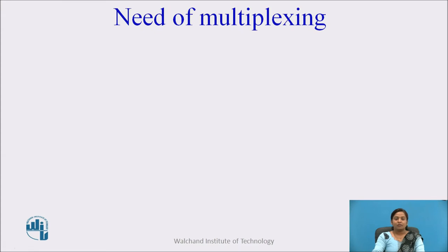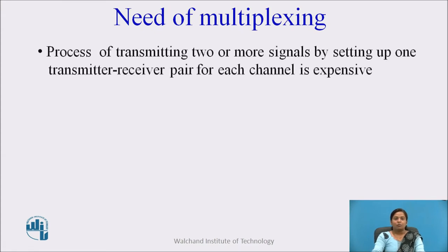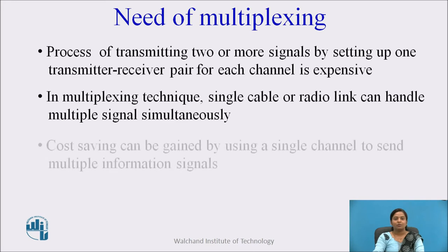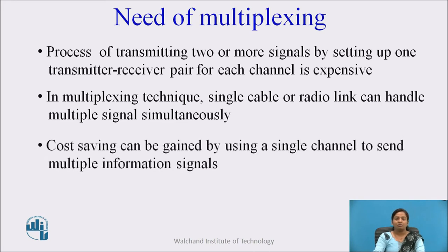Now we will see the need for multiplexing. The process of transmitting two or more signals by setting up one transmitter-receiver pair for each channel is expensive. In a multiplexing technique, a single cable or radio link can handle multiple signals simultaneously. Cost savings can be gained by using a single channel to send multiple information signals.